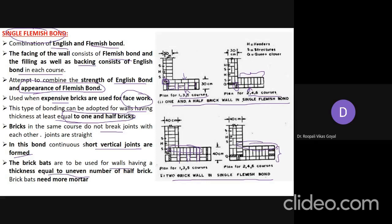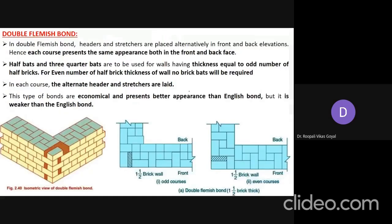More bats like three-quarter and half bats are used in Flemish bond compared to English bond. Because of the use of three-quarter bats and half bats, the use of mortar is more as compared to English bond.